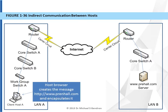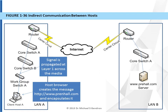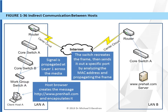Back to indirect communication. Client host A decides it wants to contact a particular web server. The client host within its browser creates a message — http://www.prenhall.com — and encapsulates that message. The message is then sent through the various layers of encapsulated communication on client host A. It is propagated across the media at layer one, and in this example goes through a workgroup switch, a number of core switches, and gets out to the edge router. The switches are responsible for recreating the frame and sending it out of a specific port by analyzing the MAC address, and also for propagating the frame along.